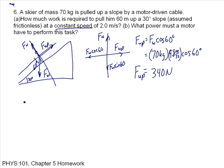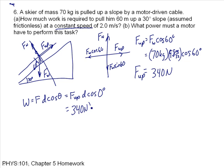To find the work: W equals F times d times cosine of the angle between force and displacement. Since F-up and the displacement are along the same direction, cosine of zero is one. So W equals 340 newtons times 60 meters times 1, giving 2000 joules.